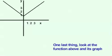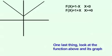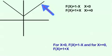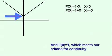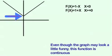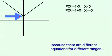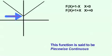One last thing, look at the absolute value function above and its graph. For x less than 0, f of x equals 1 minus x, and for x greater than or equal to 0, f of x equals 1 plus x. The limit as x approaches 0 from either direction equals 1, and f of 0 also equals 1. This meets our criteria for continuity. Even though the graph may look a little funny, this function is continuous. But because there are different equations for different ranges, this function is said to be piecewise continuous.